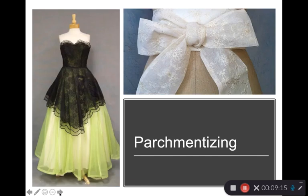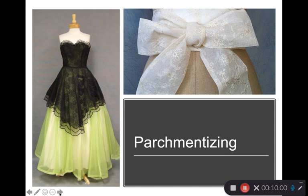Parchmentizing is a finish that affects drape, typically used on cotton or other cellulosics. It is strongly associated with sheer cotton fabrics — a sulfuric acid is applied, which dissolves the cotton slightly, making it more transparent and causing the weave to shrink a little. It must be a very controlled process, but the result is a stiff, sheer fabric. When applied all across the surface it creates a cotton fabric called organdy. Parchmentizing is a permanent change that lasts over time.